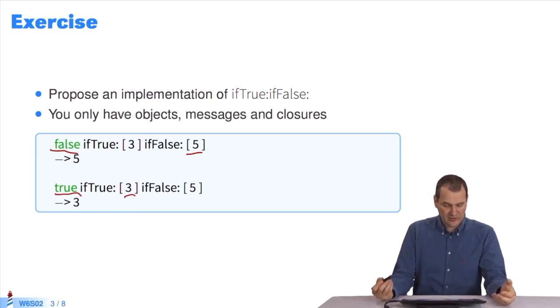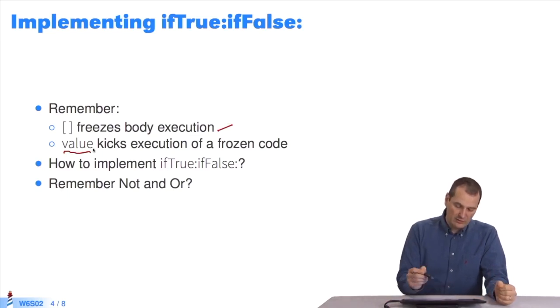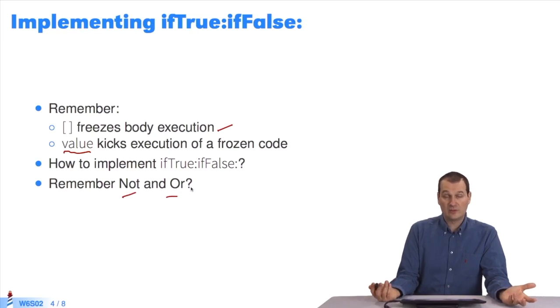Once again, we have objects, messages, and blocks. It's a bit repetitive, but that's the way it is. You remember that brackets freeze the execution of the expression they contain, and that value kicks the execution of frozen code. With this, and not, and or, you should be able to implement your conditions. Likewise, you should be able to implement if-true, if-false. I'll give you a few seconds to think.